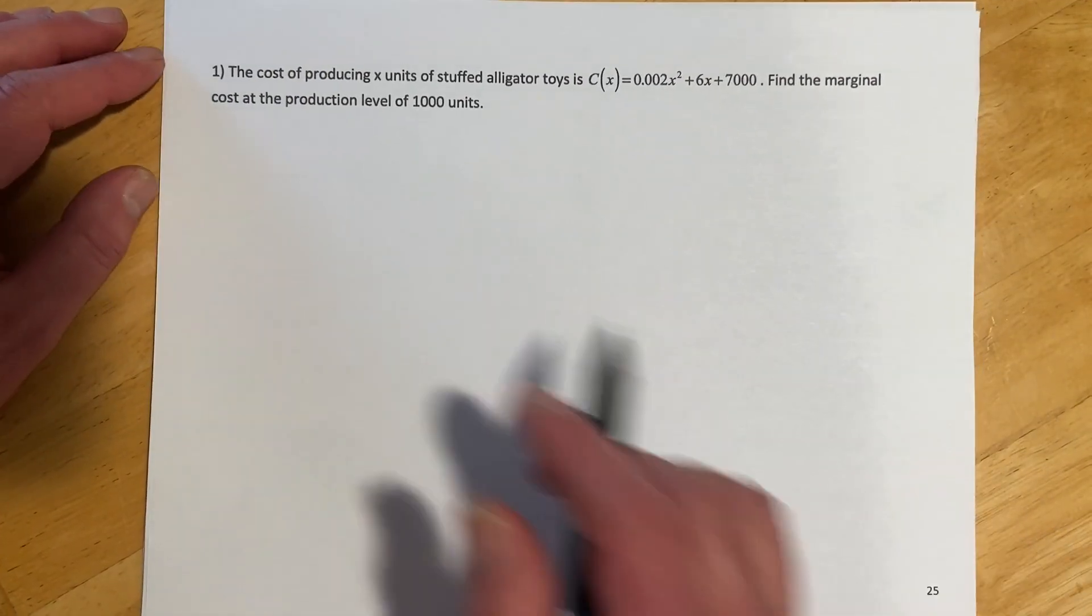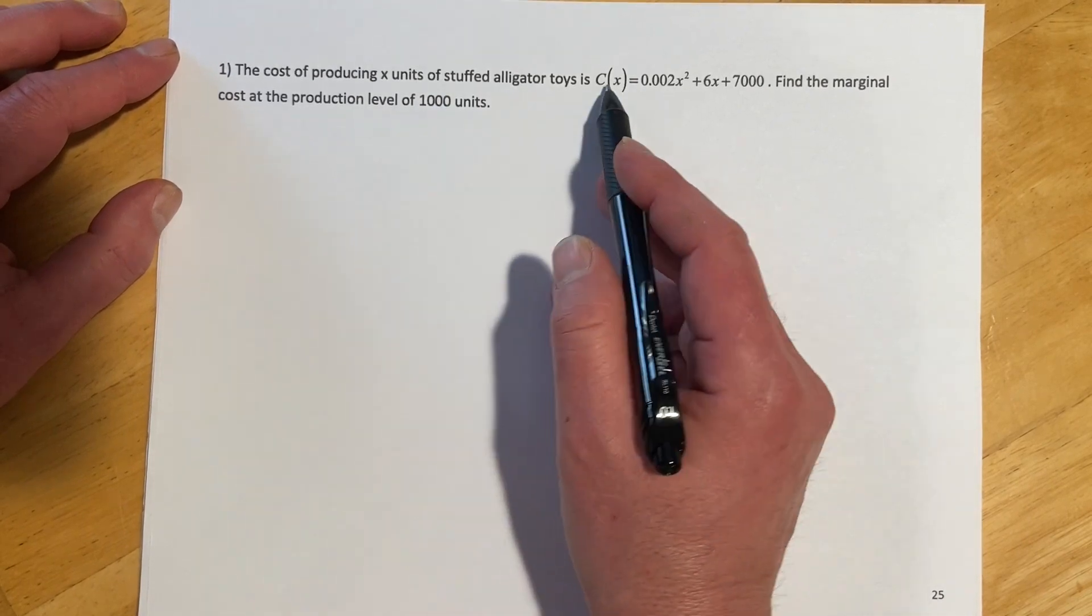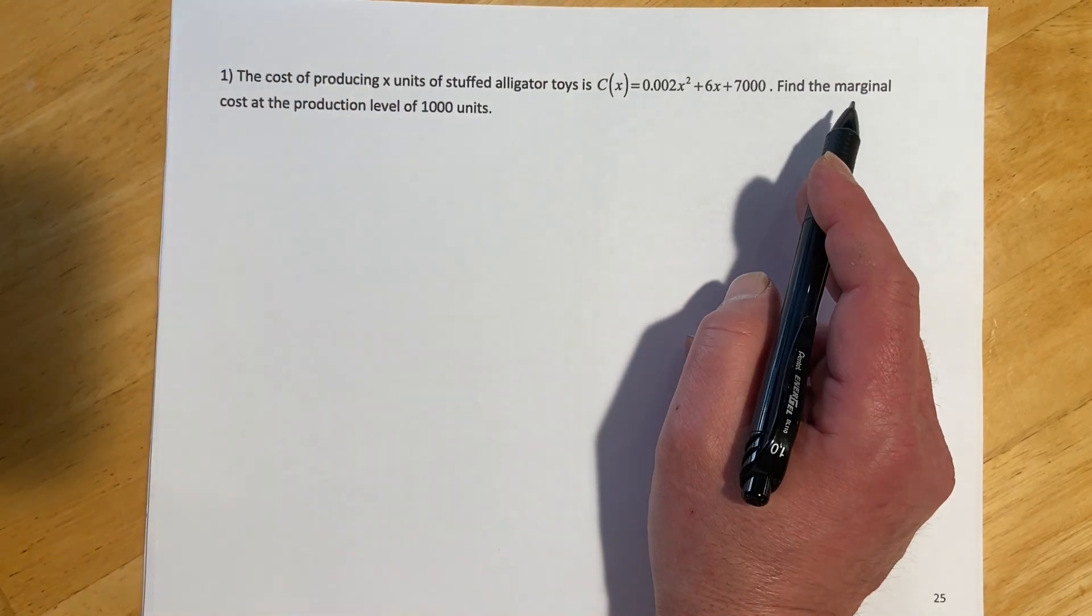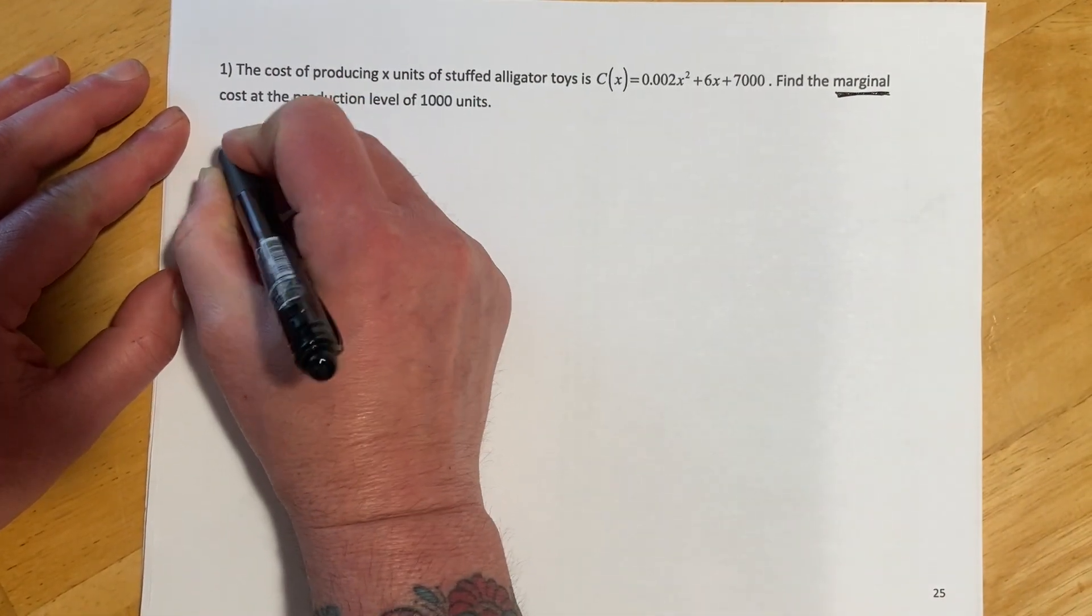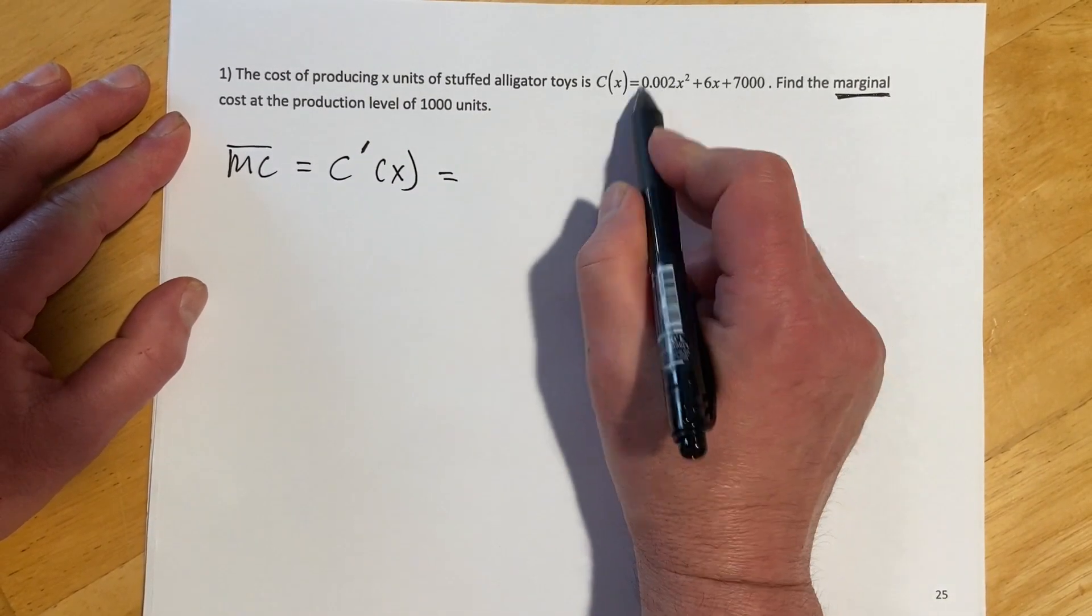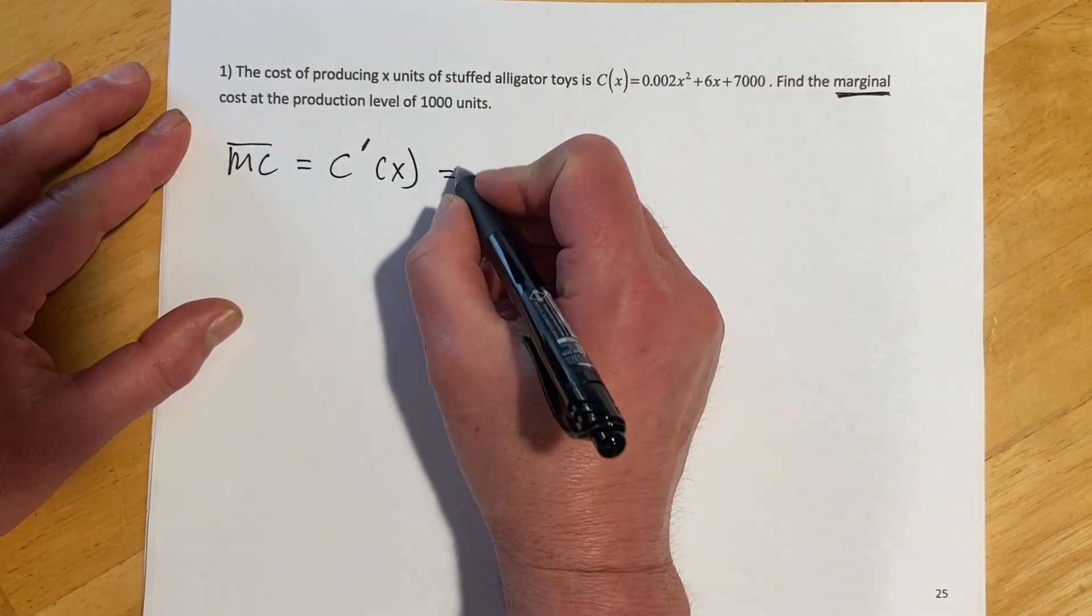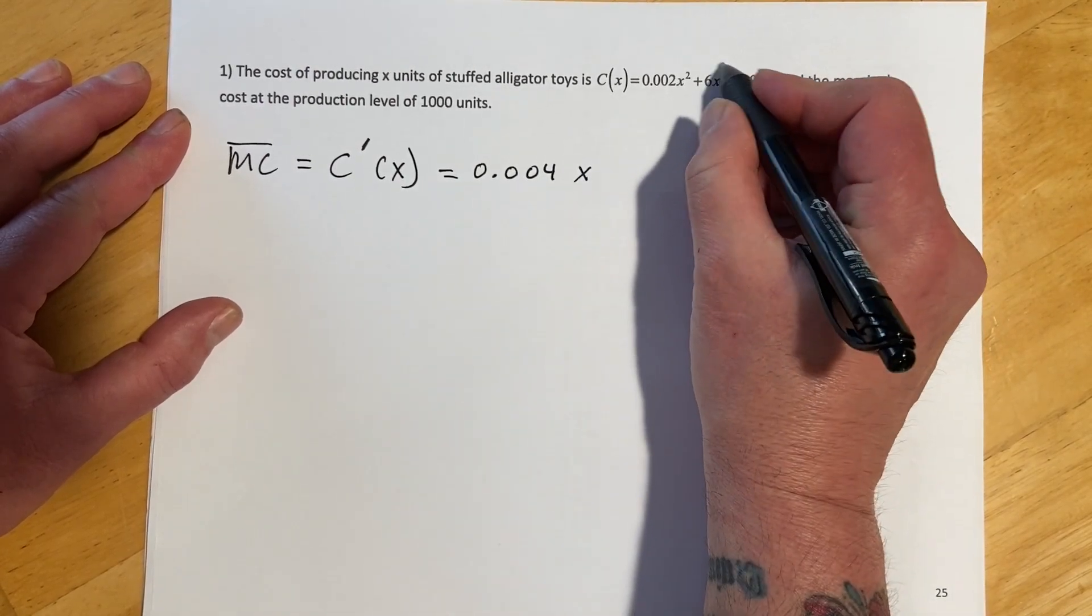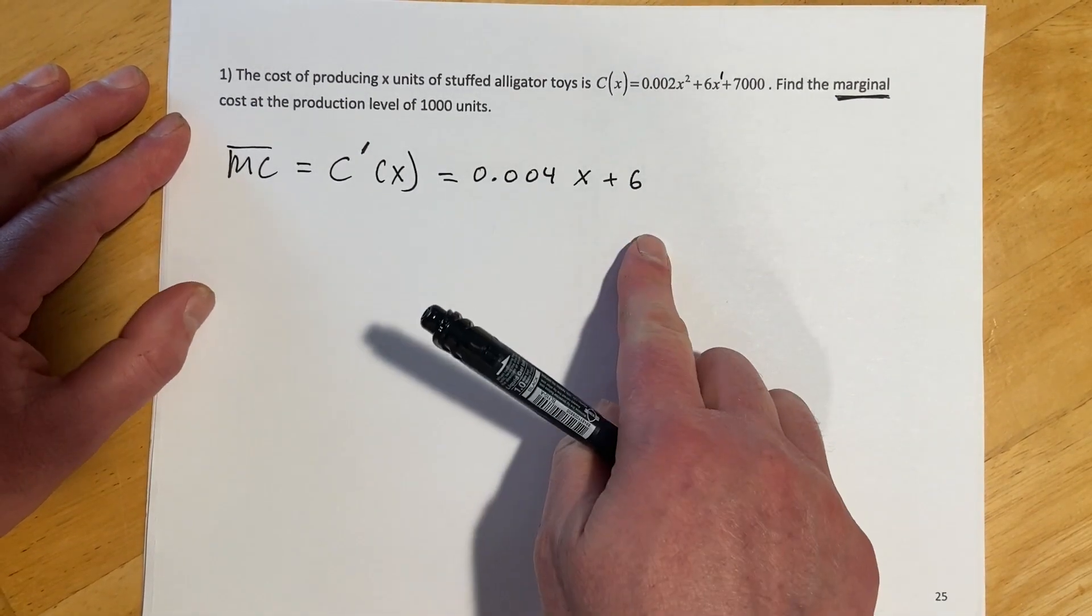Okay, this version, not too terrible. So we've got the cost of producing x units of stuffed alligator toys is that function right there. Find the marginal cost at the production level of 1,000 units. So if I'm looking for marginal, that means the marginal cost is the same thing as finding c prime of x. And so here's our cost function. So I'll just go to 2 times that 0.002 would be 0.004x and then 1 times 6 for plus 6. So there's our marginal cost function.